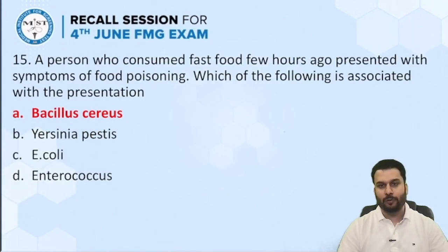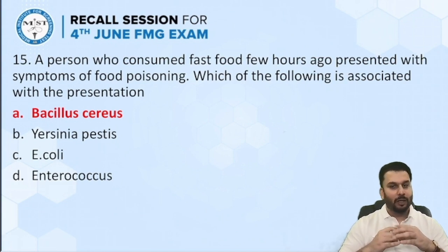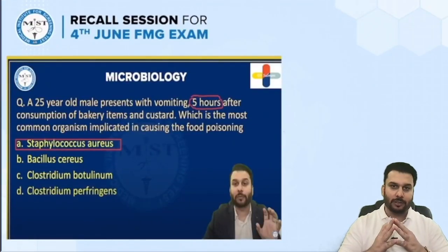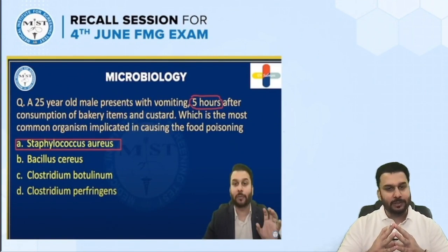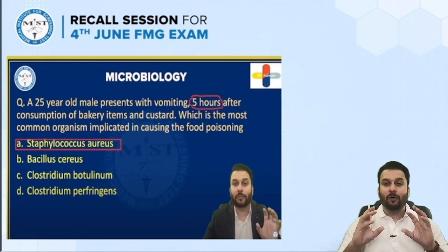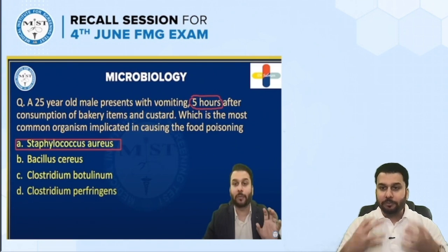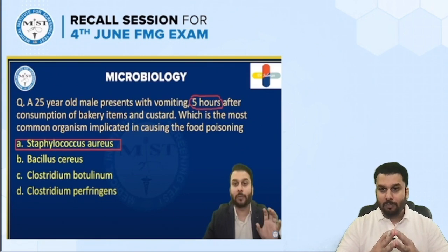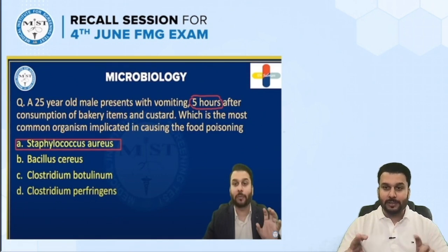Next question: a person who consumed fast food a few hours ago presented with symptoms of food poisoning. Which organism is associated with this? The correct answer was Bacillus cereus. This was also discussed in the last 25 important questions. I highlighted how to diagnose which food poisoning depending on which foods are mentioned, the time duration, and symptoms — discussing Bacillus cereus and Staph aureus. If fast food is mentioned, Bacillus cereus is the answer; if bakery items or custard are mentioned, Staph aureus should be chosen.